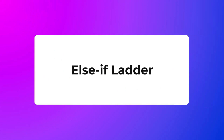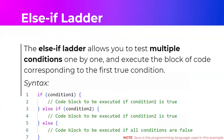Now let's look at the else-if statement. The else-if allows us to test multiple conditions one by one and execute the block of code corresponding to the first true condition. If the first condition is false, we proceed to the first else-if. If that is also false, we proceed to another else-if. If all conditions are false, we fall to the else statement.